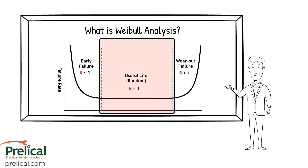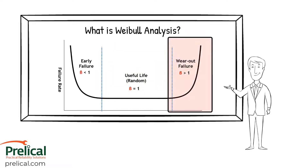If we get a beta value equal to one, that would indicate that we're having random failures — random meaning it could happen today, tomorrow, six months from now, or 10 years from now; time is really not a factor. And finally, if our beta value is greater than one, we're having wearout failures, meaning we get some sort of life and then the component or the equipment begins to deteriorate over time.